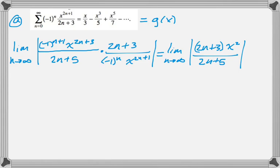You take this limit, you have 2n plus 3 over 2n plus 5, as you go to infinity, is just 1, and x squared is always greater than 0, so the absolute values aren't necessary anymore. So we just have x squared.